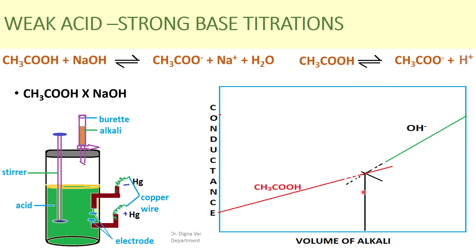After the neutralization point, all the acetic acid is converted to sodium acetate. After that, further addition of alkali provides Na+ and OH- ions. The conductance increases after the equivalence point due to the fast-moving OH- ions. So the conductance versus volume of alkali plot for the acetic acid versus NaOH titration shows a gradual increase up to the equivalence point, followed by a sharper increase due to OH- ions.